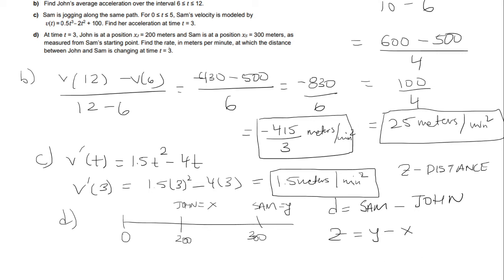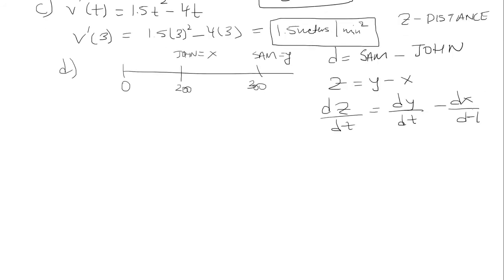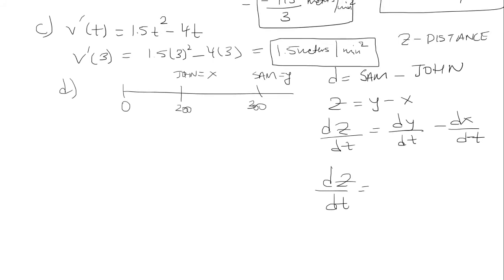So then I want to find the rate at which the distance between John and Sam is changing at time t equals 3. So I have to take the derivative of this. So that would be dz over dt is equal to dy over dt minus dx over dt. So for this one, these are derivatives of the position. So the derivative of the position is really the velocity. Okay, so I want to find dz over dt. How is Sam changing? How is his position changing? Well that's his velocity.